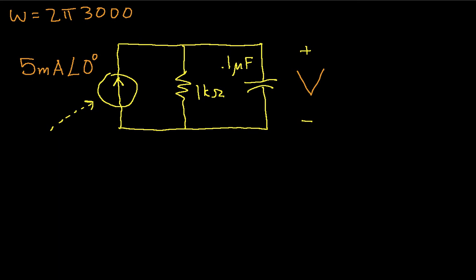The next step is to convert the components into impedances. And so the 1k ohm resistor, we know that the impedance of a resistor is the resistance, so Zr is 1k ohm.